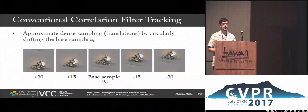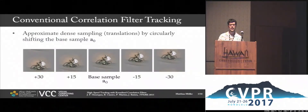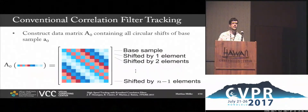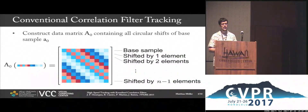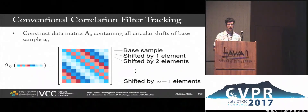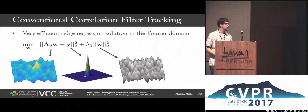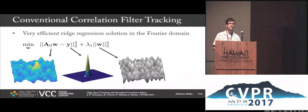This is where correlation filter tracking comes in. The idea is that we can achieve approximately a dense sampling by simply circularly shifting the target patch. The nice thing is that we can put all of those circular shifts that we get for free into a data matrix. This is a circulant matrix which has very nice properties that we can exploit.